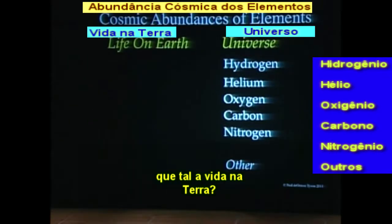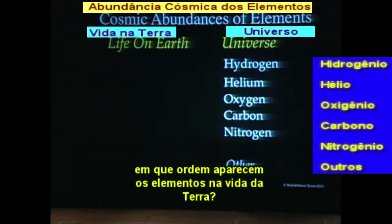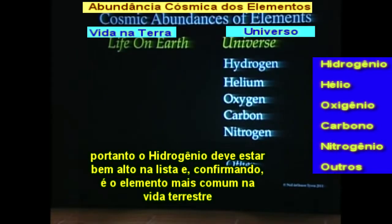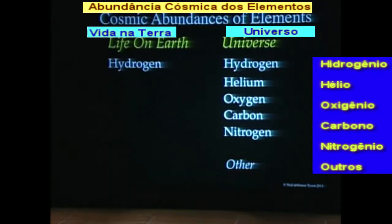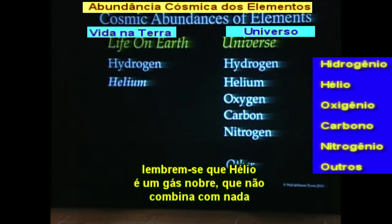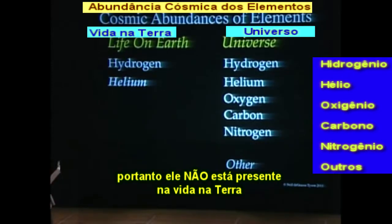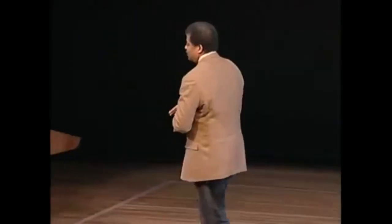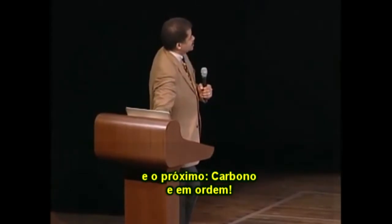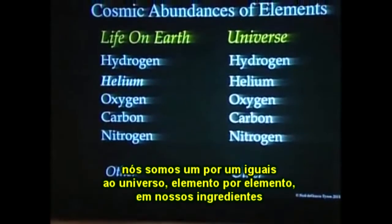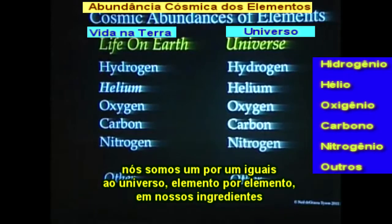So then, how about life on Earth? What's the ranking of elements in life on Earth? Well, all life contains water of some kind or another. Water is made of hydrogen and oxygen, so hydrogen's got to be pretty high up there. Sure enough, it's the number one element in life on Earth. We don't actually have helium — helium is a noble gas, it does not interact with anything, so helium is not in life on Earth. You could inhale it, then you sound like Mickey Mouse. Next most abundant ingredient in life on Earth: oxygen. Next: carbon. Next: nitrogen. And together, class? Other. We are one for one the same ingredients that appear in the universe.